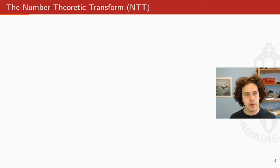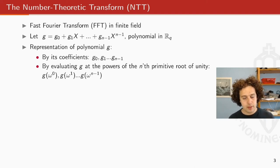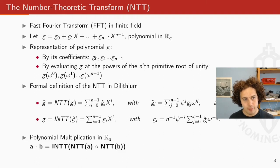So, the number theoretic transform is basically a transformation which is done in a ring, which basically, if you have a polynomial in your ring, then you can evaluate this polynomial at the power of the nth primitive root of unity in this ring. And then you will end up with another representation of the same polynomial. The formal definition you can see here on the slides. These are all really complicated multiplications and they're also inefficient. But in practice, what we do is we generally use the fast Fourier transform algorithm to compute the NTT of a certain polynomial.